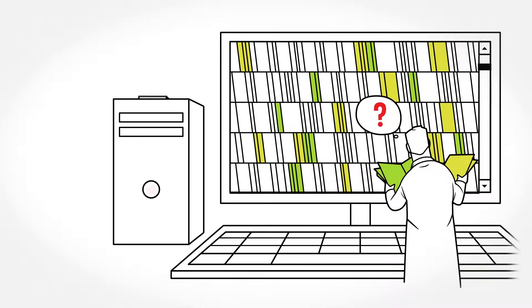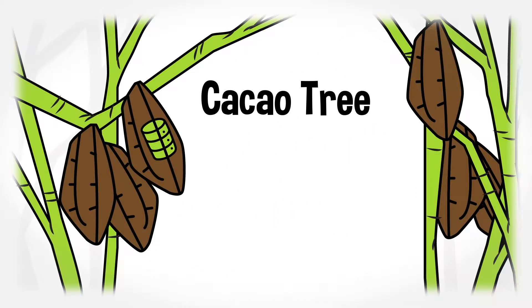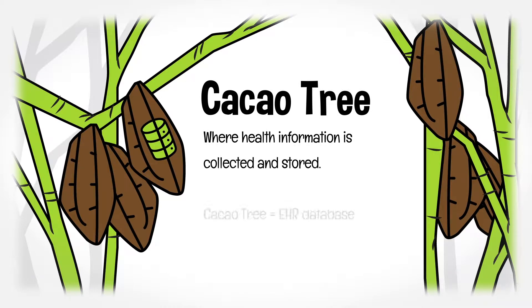Let's make this short and sweet by exploring how chocolate is made, starting with its main ingredient cacao. The cacao tree is where each cacao pod is picked and represents the EHR database at each network institution where a patient's health information is collected and stored.